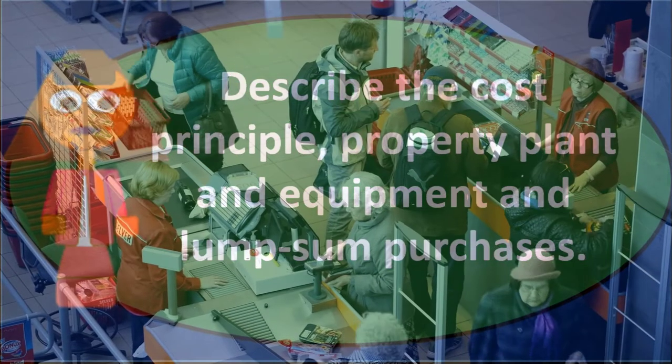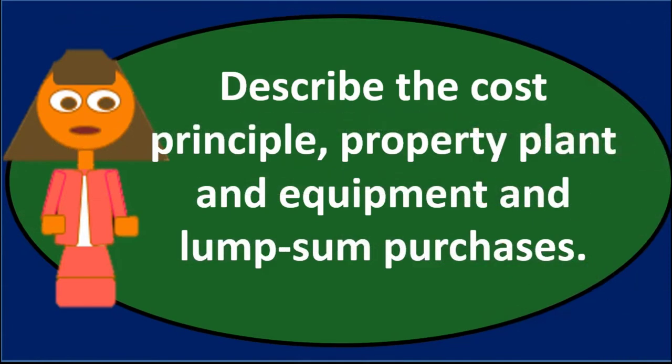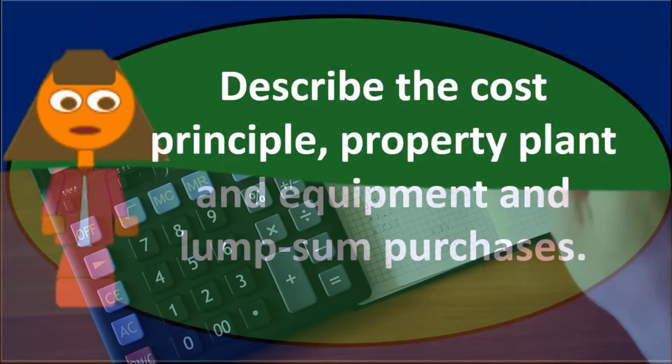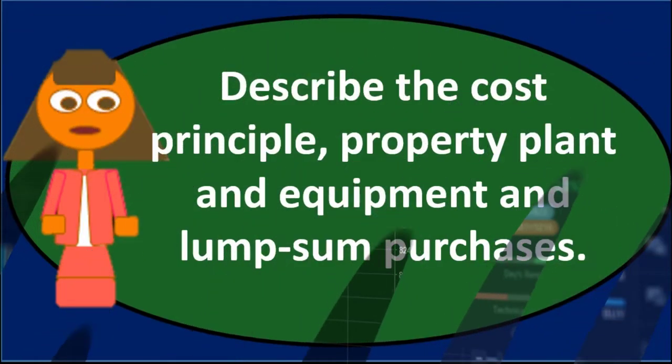At the point we purchase, we're probably at fair market value because we purchased it on the market. But after that point in time, we're allocating the cost in accordance with the cost principle, allocating the cost to the time period in which it's consumed, not necessarily trying to find and report the fair market value of the equipment at any given time.